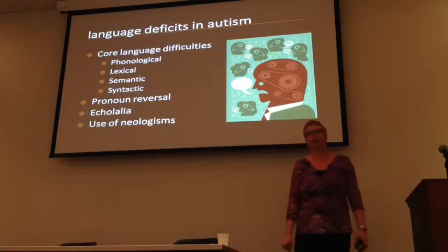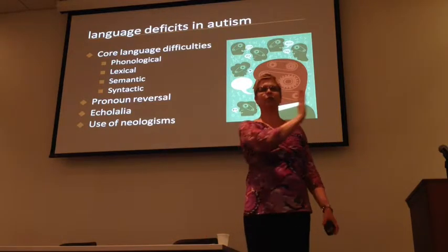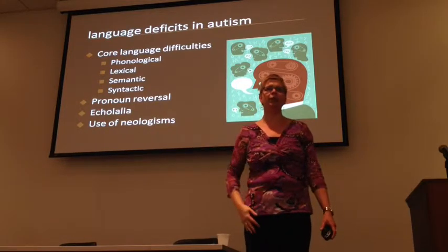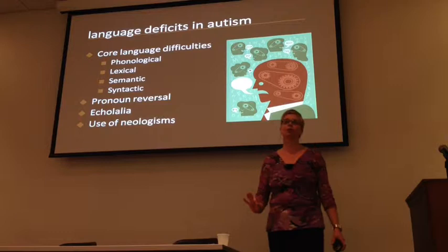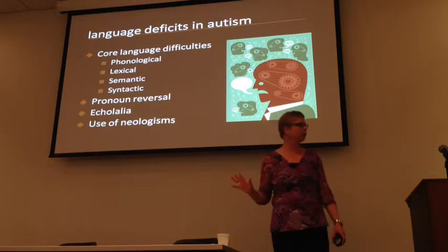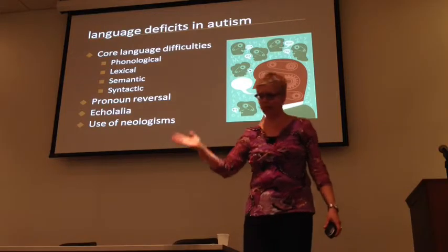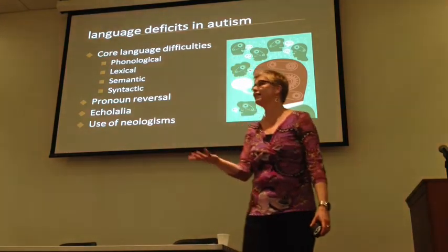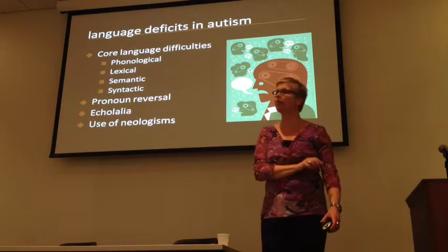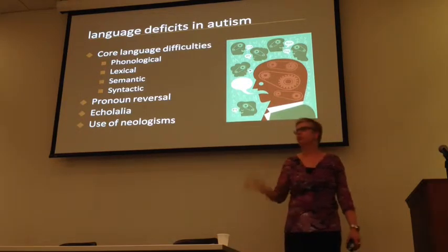Language in autism is characterized by a range of difficulties. There's the whole spectrum from kids who are completely nonverbal up to kids with autism who seem to have relatively small problems with language. Core language difficulties include phonological problems, lexical problems, semantic and syntactic problems. Common characteristics include things like pronoun reversal — referring to themselves with the wrong pronoun — echolalia, and making up their own words.